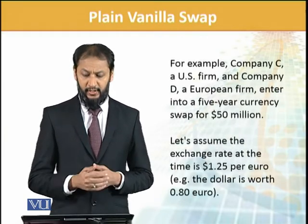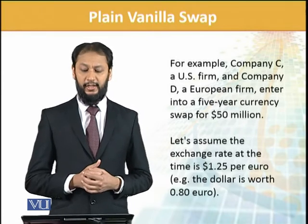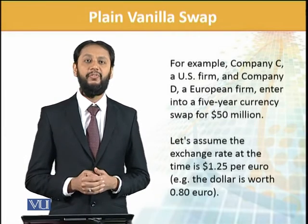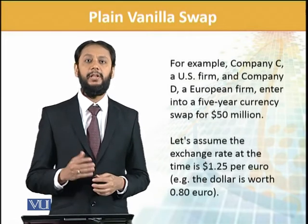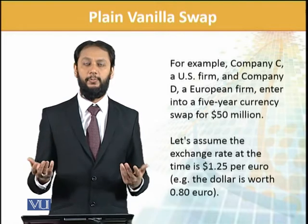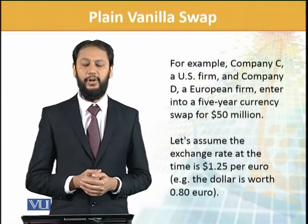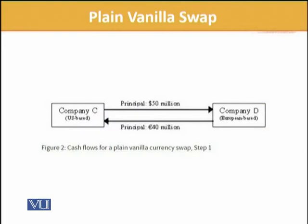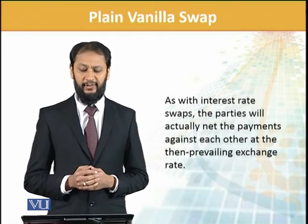For example, Company C, a US firm, and Company D enter a currency swap. Company C puts up 50 million dollars. That does not mean the euro amount is also 50 million — it depends on the exchange rate. The exchange rate was 1.25, which translates to 0.8 euros per dollar. So Company C pays a principal of 50 million dollars and Company D pays a principal of 40 million euros, exchanged at the prevailing rate on that date.